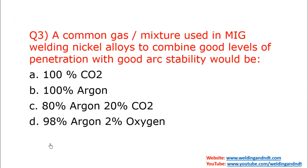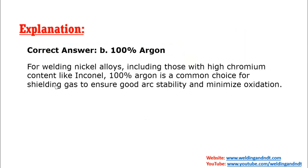Question number three: a common gas mixture used in MIG welding of nickel alloys to combine good levels of penetration with good arc stability would be? The correct answer is 100% argon. For nickel alloys, 100% argon is the correct shielding gas. Not only nickel alloys but alloys with high chromium content like Inconel also benefit from 100% argon as a shielding gas.